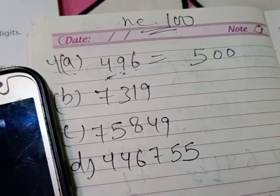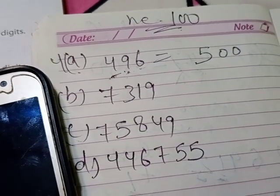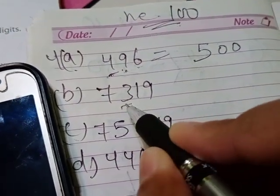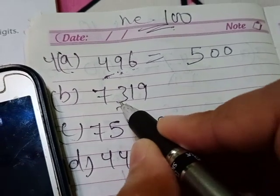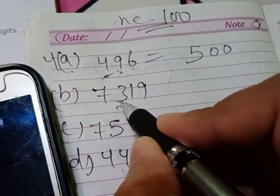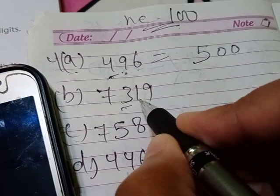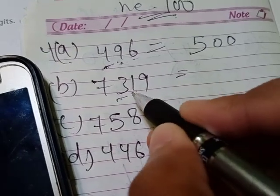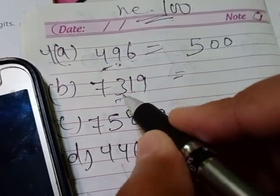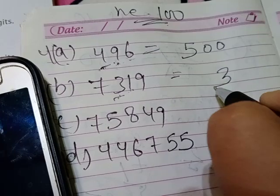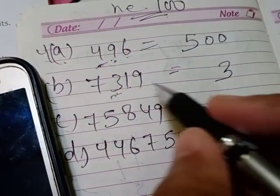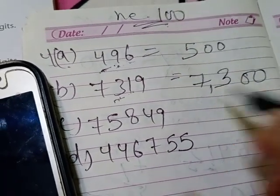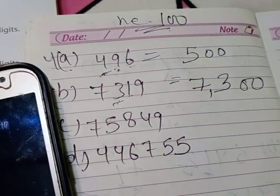Now for the next example, we have to round off to the nearest hundred, so we come to the hundreds place. To round off this number, we see the digit to its right. Here it is 1. Is 1 more or less than 5? Less than 5. So when it is less than 5, the hundreds digit 3 is written as 3 only, and the digits before it stay the same, followed by 0 0.